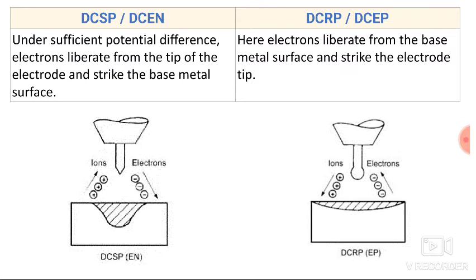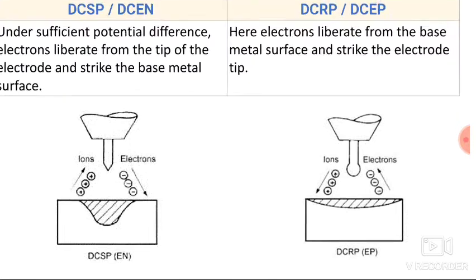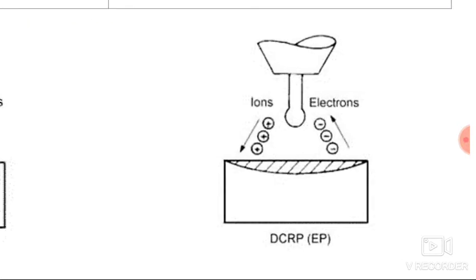In reverse polarity, electrons are liberated from the base metal surface and strike the electrode. Here you can see that the work piece is connected with the negative terminal and the electrode is connected with the positive terminal, so the electrons are liberated from the work piece and travel towards the electrode.